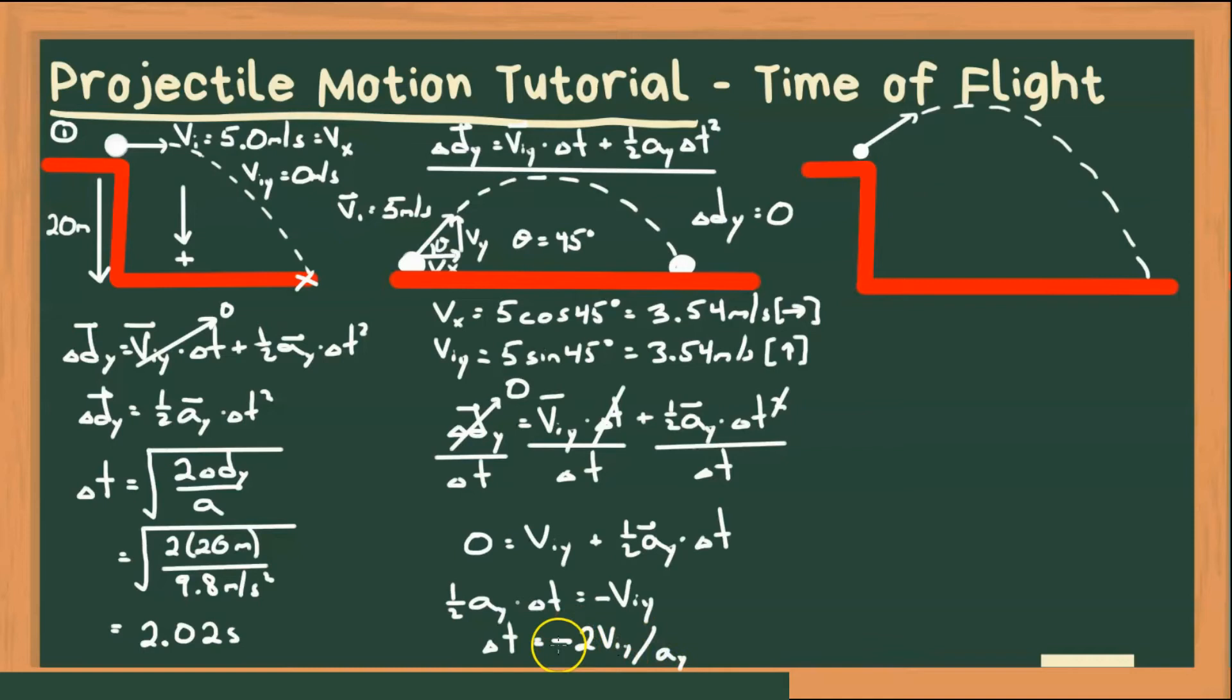All right, so that negative might be bothering you, but that's okay. We haven't really chosen a coordinate system. You can choose up as positive or down as positive, doesn't matter. In this case, let's choose up as positive. If we do that, our initial velocity is going to have a positive value, but our acceleration, which is 9.8 meters per second squared down, will need to be negative.